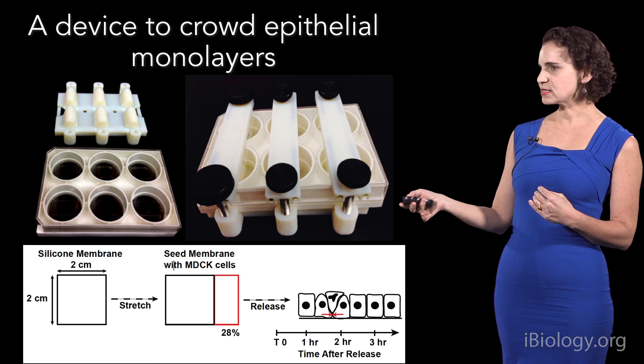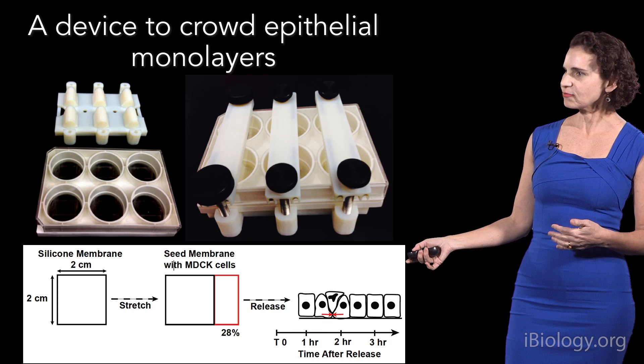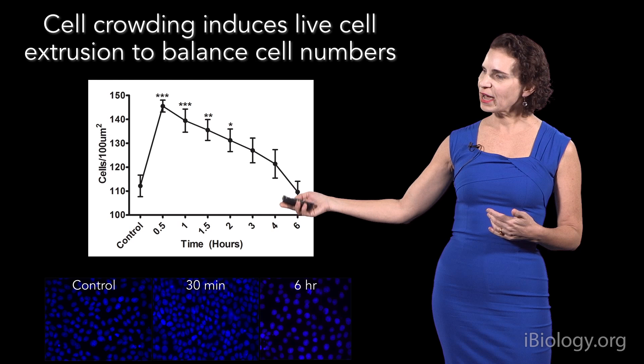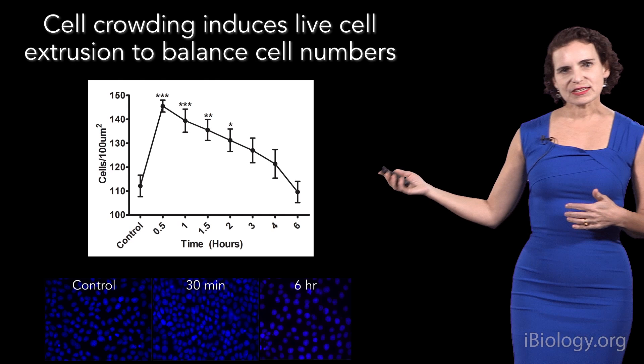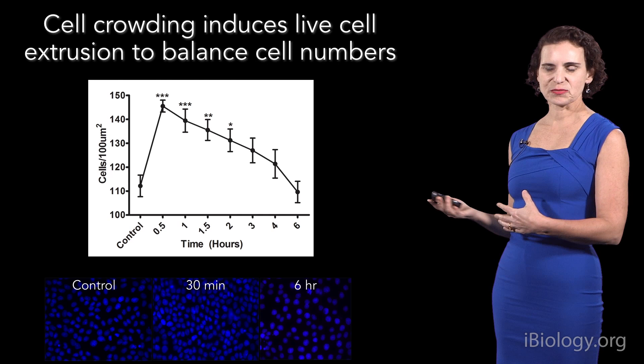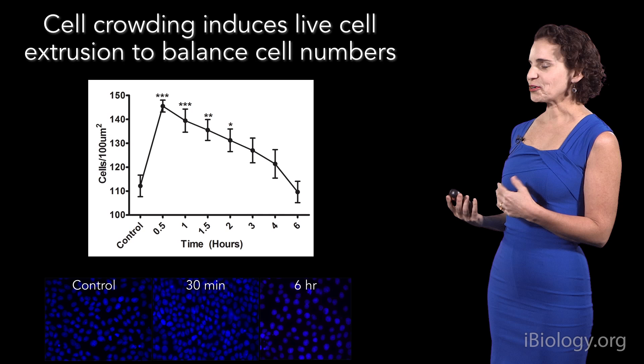To test this, we created a stretching device that we used in reverse. We grew cells in a stretched state until confluence and then released them, causing them to become crowded. At 30 minutes you can see they've become quite crowded, but by 6 hours they go back to homeostatic densities they prefer. So it's as if these cells have a sense of personal space — these densities are too crowded for them, and this is where they feel more comfortable.